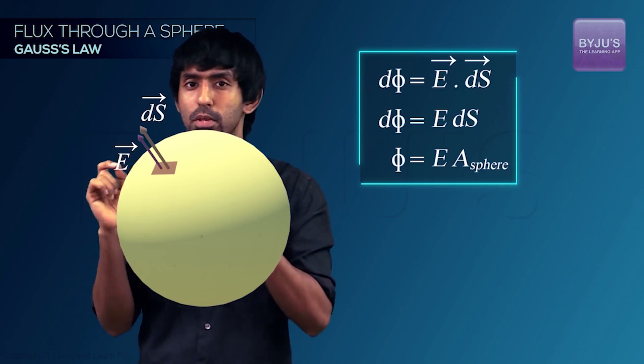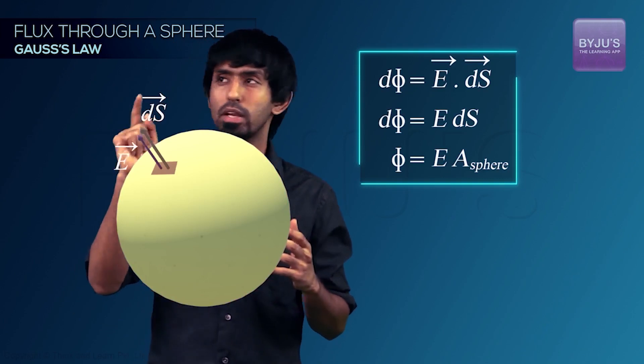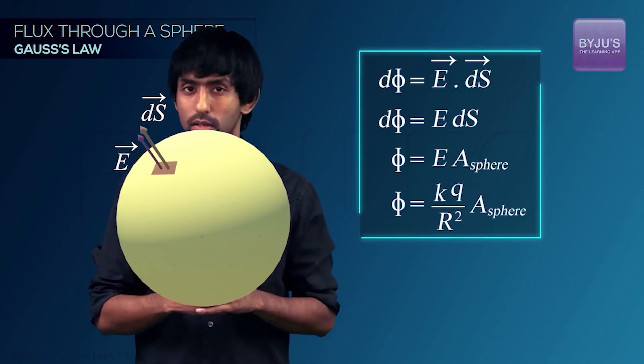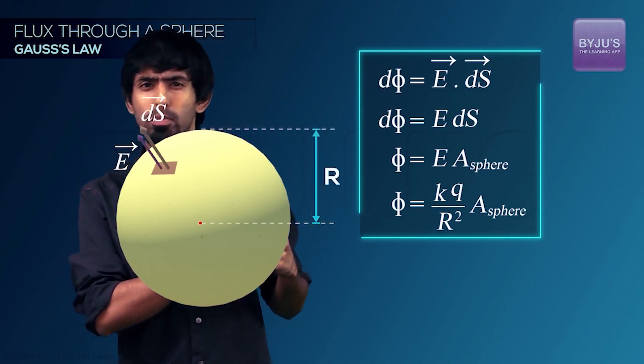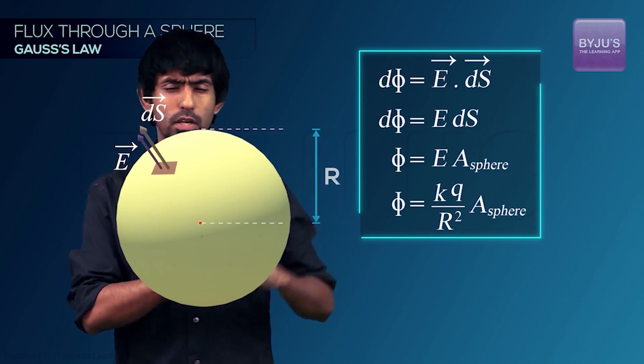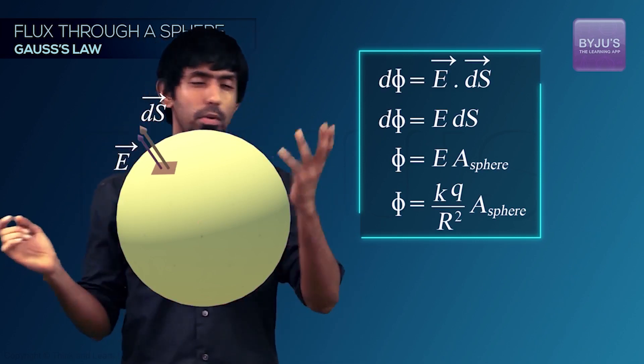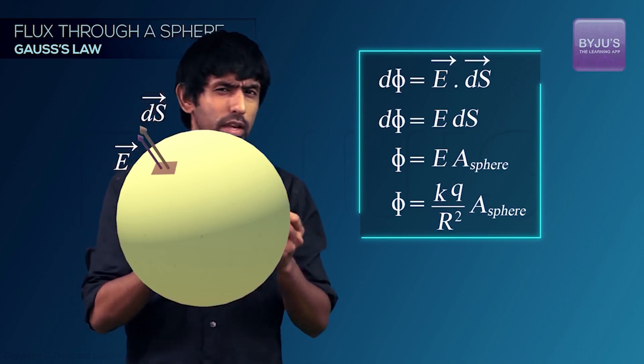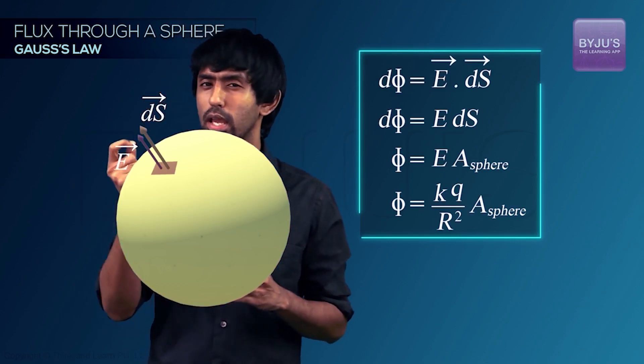So the problem becomes much simpler because you have chosen a very symmetric sphere. So what's the electric field at that point? It's going to be KQ by R squared. The R is the radius of the sphere. We know that K is 1 by 4π epsilon-naught, but let's keep it that way. So if you've done this now, then what's the area of the sphere? You have to multiply it with that and then you have the flux. The flux is going to be positive.